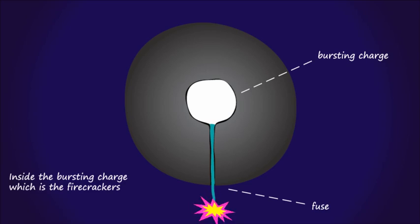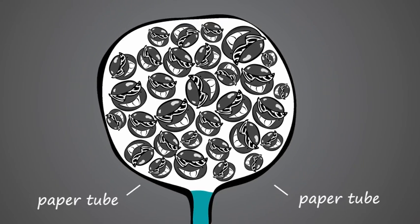Inside the bursting charge, which is the firecracker, consists of black powder. They are packed in a tight paper tube with a fuse to ignite the powder.